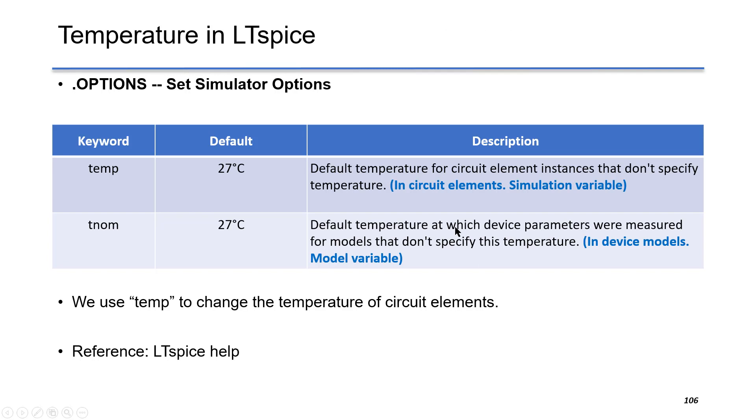Temperature in LT SPICE. So there are two keywords in LT SPICE to define the temperature. The first one is temp. The default value is 27 degrees C. This is the default temperature for circuit element instances that don't specify temperature. This is the temperature we use in circuit simulation.